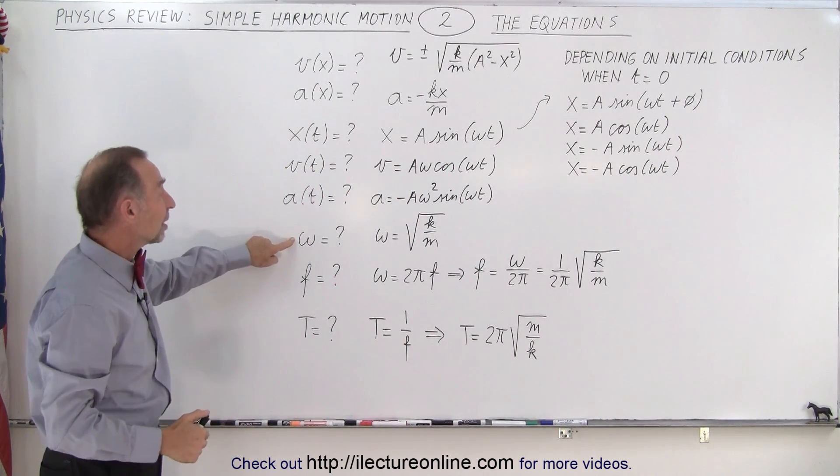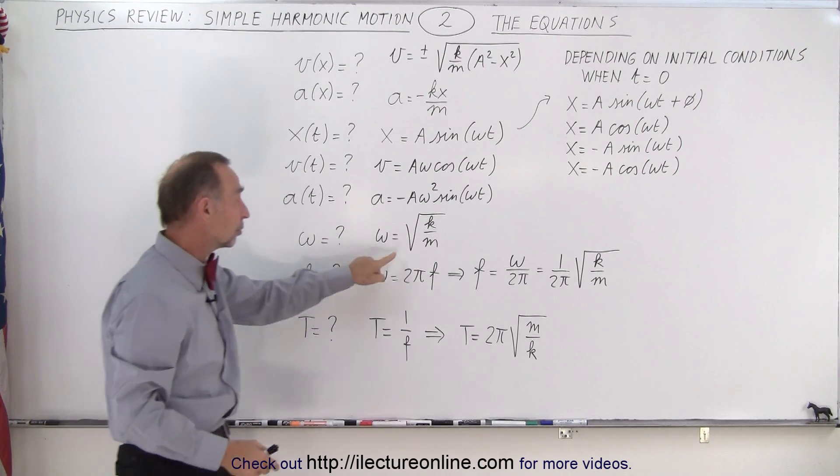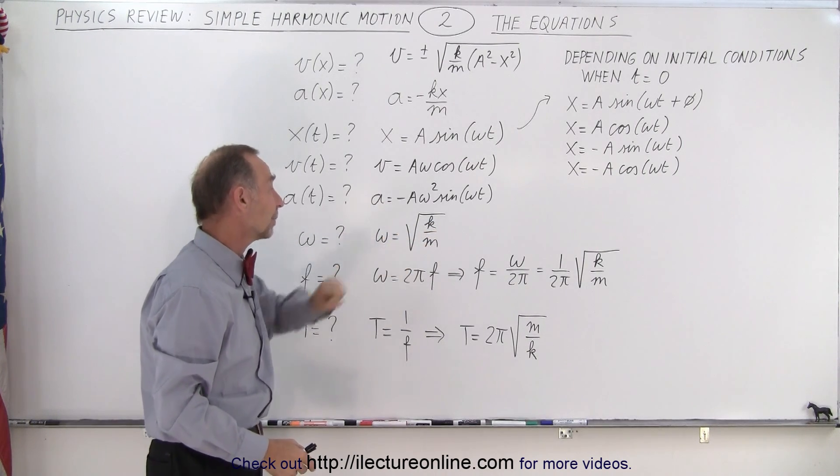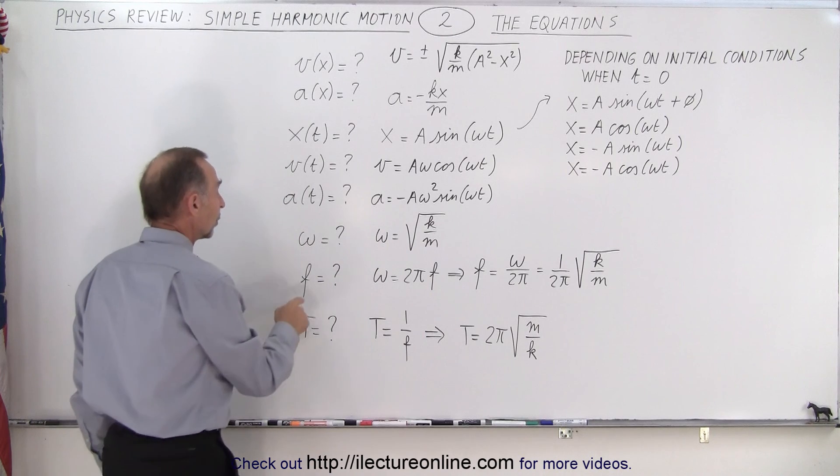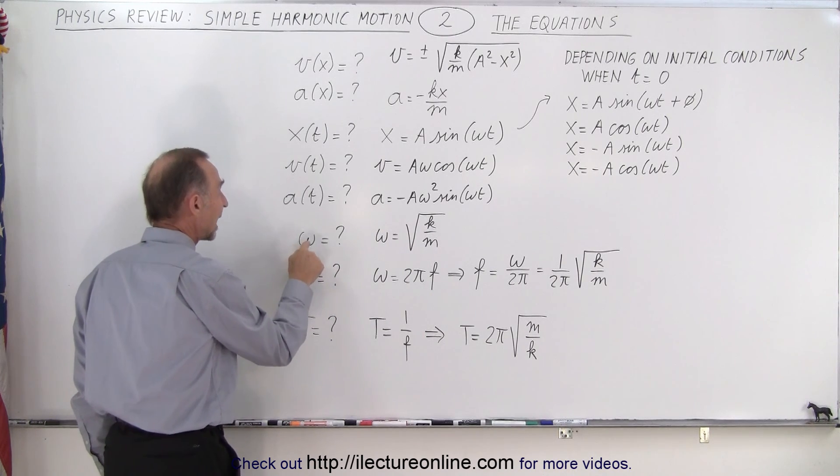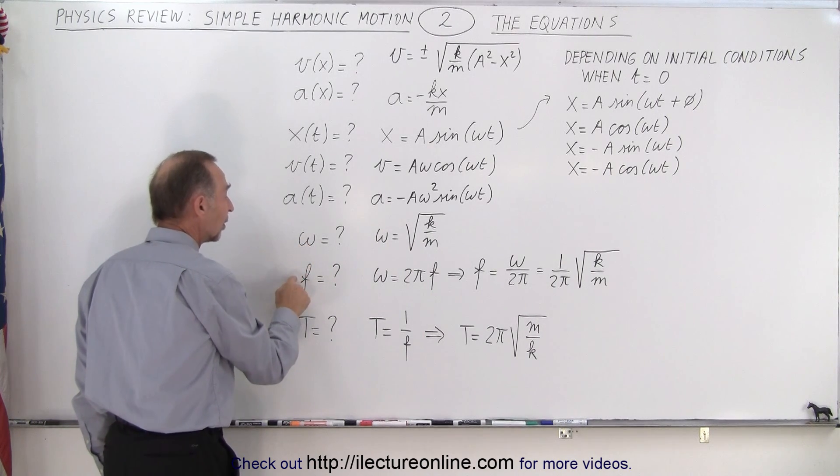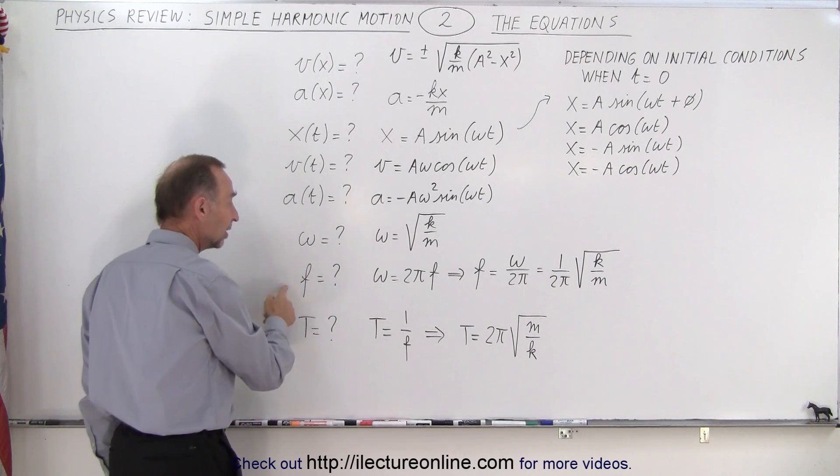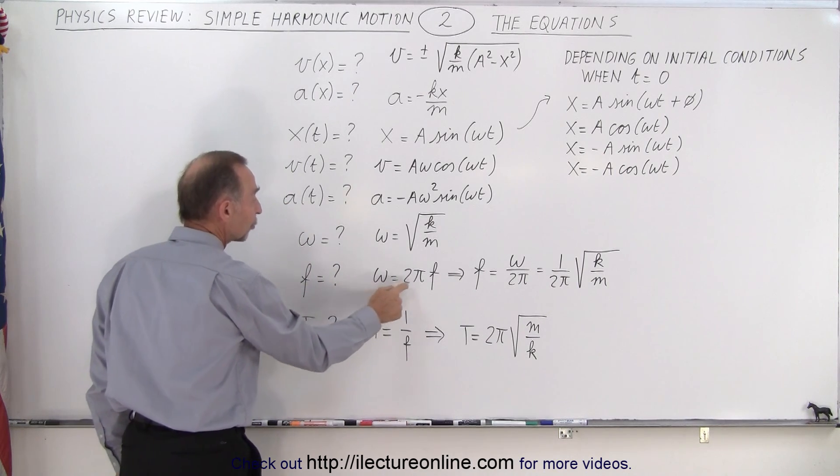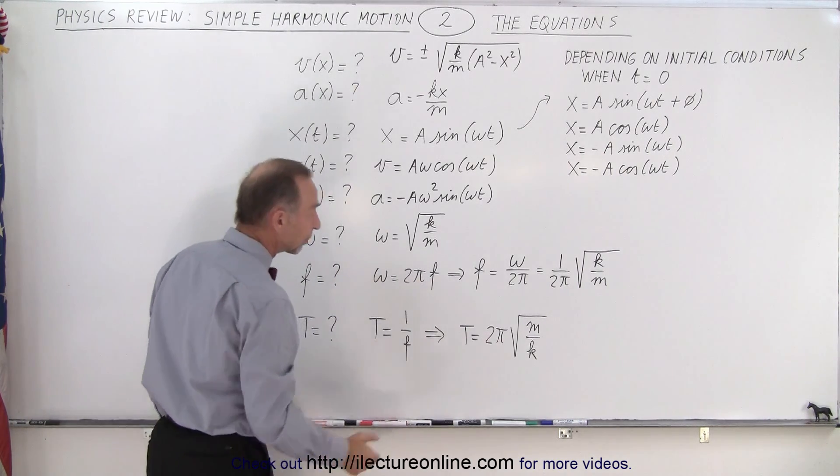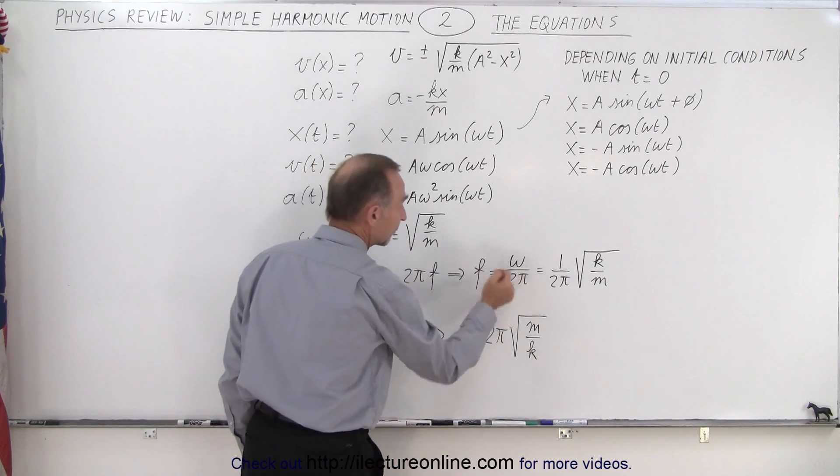The angular frequency of oscillation is simply equal to the square root of the spring constant divided by the mass of the object. The relationship between these two, this is the angular frequency, this is the oscillation frequency, and we know that the angular frequency is 2π times the oscillation frequency, so therefore f equals omega divided by 2π.